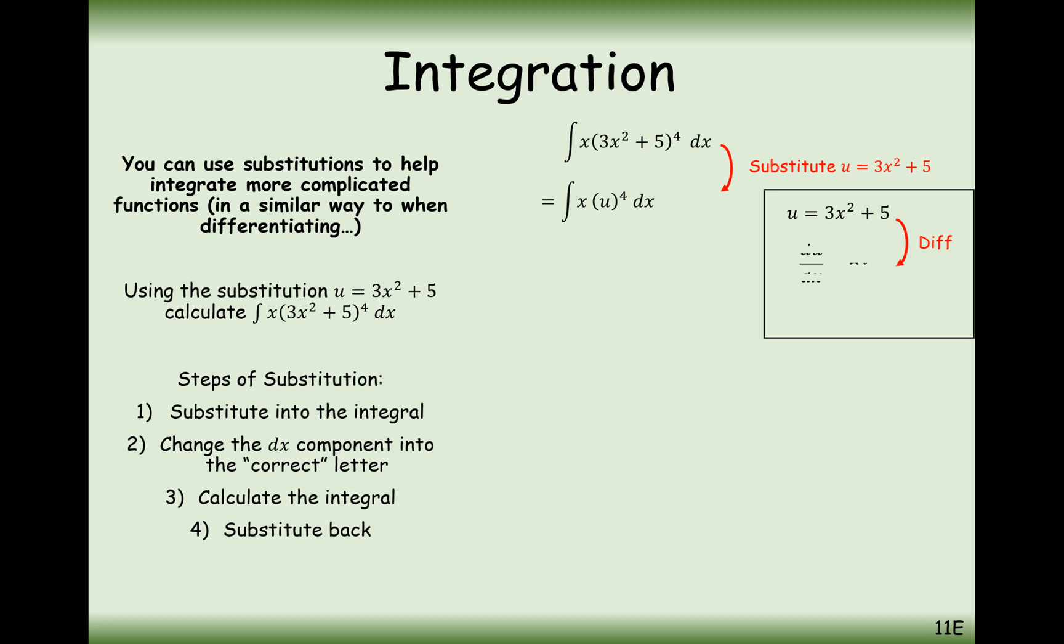Differentiate your substitution and then rearrange onto the other side, and you now get dx equaling one sixth x du. When we substitute that in for dx, what we're going to see here is that the x's, one on the top, one on the bottom of a fraction, are going to simplify with each other.